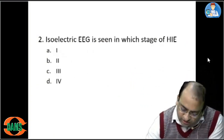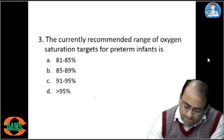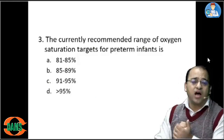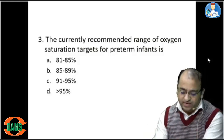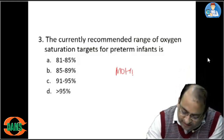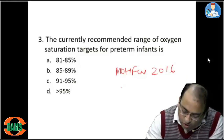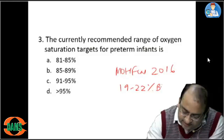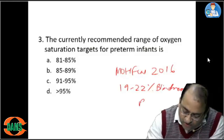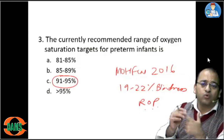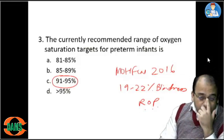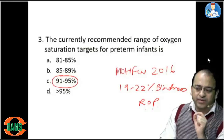In preterms we avoid hyperoxia because hyperoxia causes retrolental fibroplasia. According to the Ministry of Health and Family Welfare 2016, almost 19 to 22 percent of blindness in children is due to ROP — retinopathy of prematurity. The oxygen target according to WHO for preterms is 91 to 95% only; you do not need hyperoxia in a preterm.